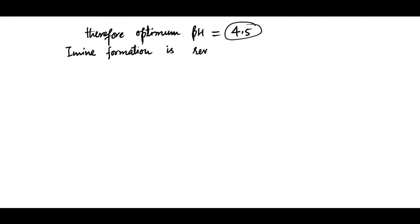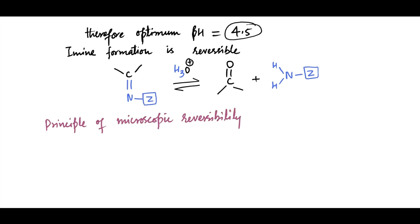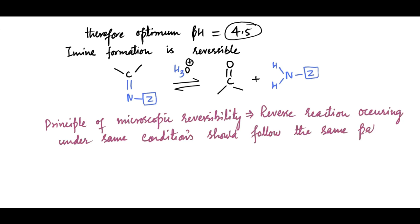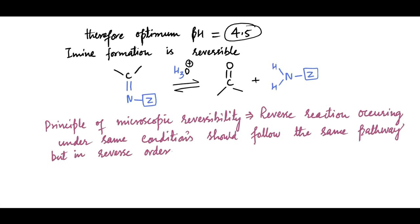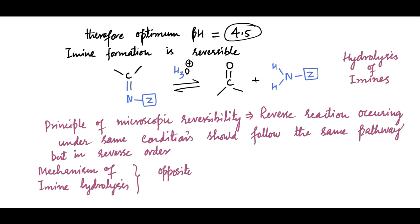Imine formation is reversible, and most imines can be hydrolyzed back to the amine and the ketone or aldehyde. The principle of microscopic reversibility states that the reverse reaction taking place under the same conditions should follow the same pathway, but in reverse order. Therefore, the mechanism for hydrolysis of an imine is simply the reverse of the mechanism for its formation.